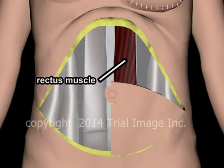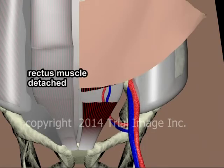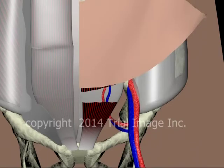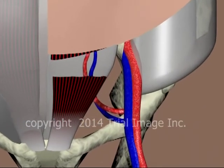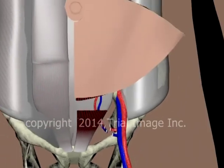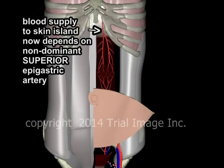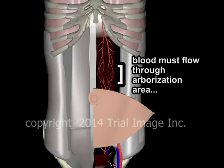The skin island must now be freed of its attachments so that it may be rotated up into the chest wall. First, the rectus muscle is detached from its connection to the pubic bone. Next, the deep inferior epigastric artery and vein attachments are cut and clipped. As touched on earlier, the skin island is now completely dependent for blood supply on the non-dominant superior epigastric artery. This is a less-than-ideal but unavoidable aspect of the TRAM procedure.